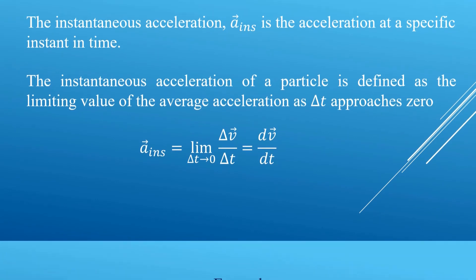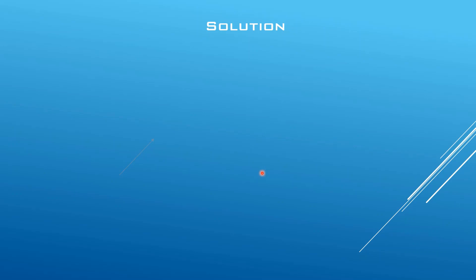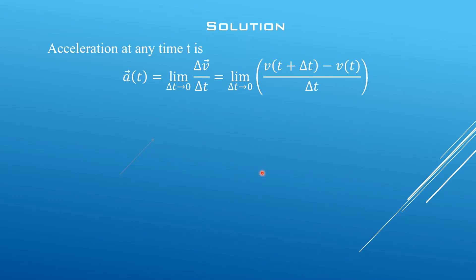Example: the velocity of a particle moving along a straight line varies as a function of time with velocity equation v(t) = 5t² - 5t + 2. Find the acceleration of the particle at any time and at t = 2 seconds. The acceleration at any time t is given by a(t) = limit of change of v over change of t as change of t approaches zero.